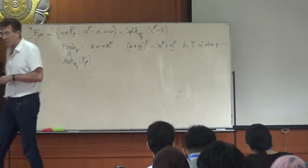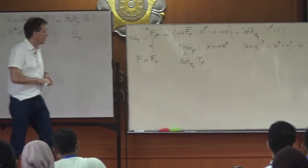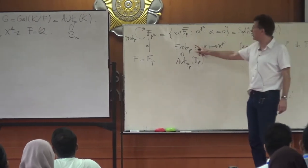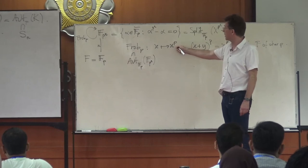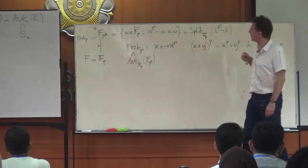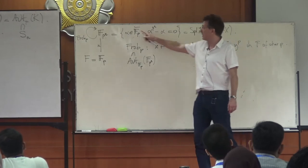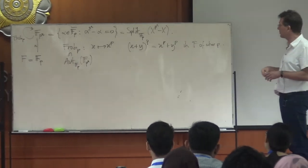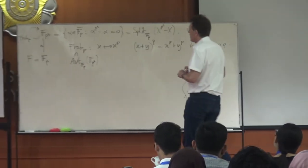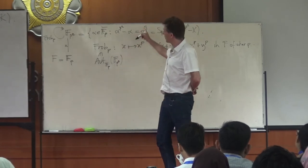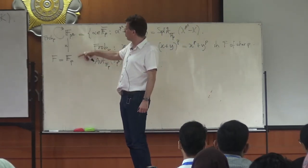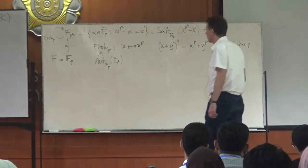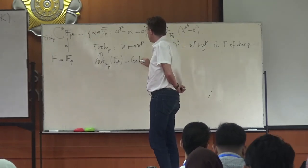Frobenius is an automorphism and you need to apply it n times to get the identity on 𝔽_{p^n}: applying it n times raises to the power p^n, which fixes all elements. Any smaller power won't suffice, so the Frobenius element has order n. The general theory tells you the Galois group has order n, so it is generated by Frobenius alone.